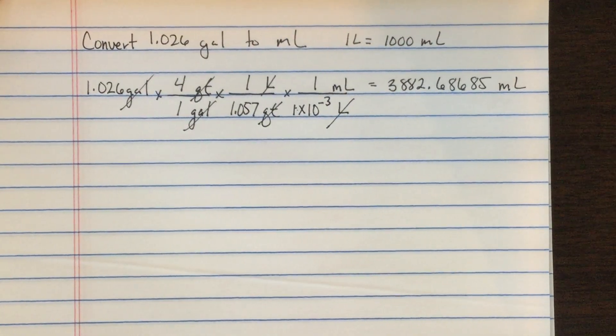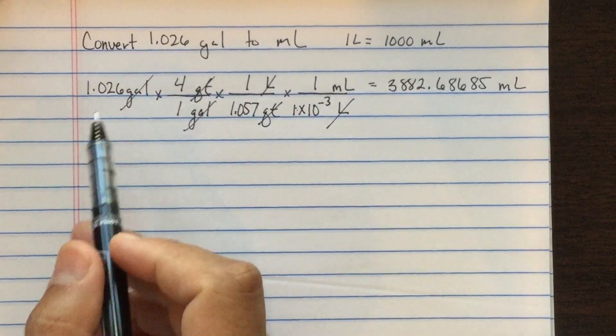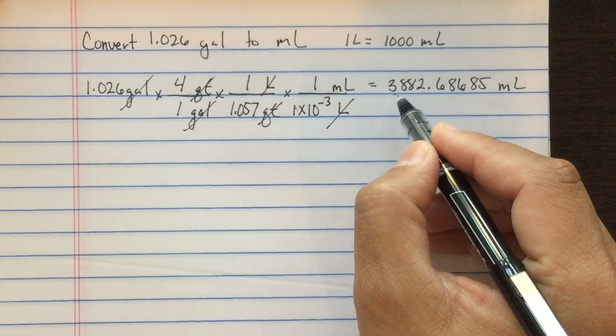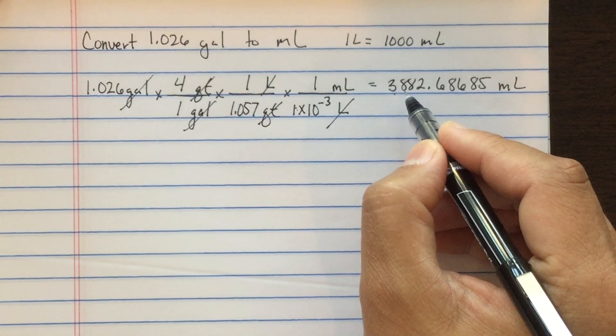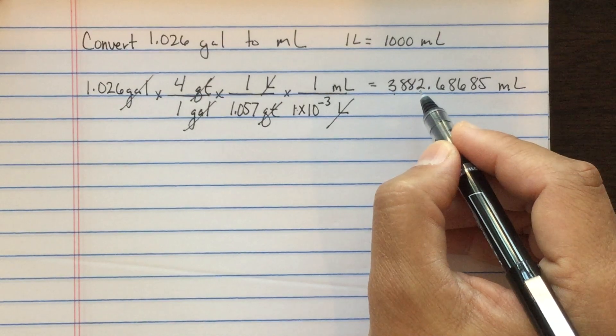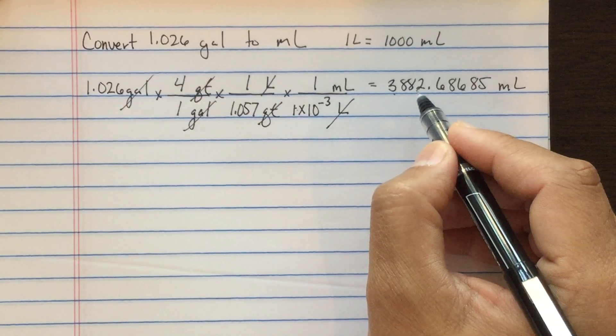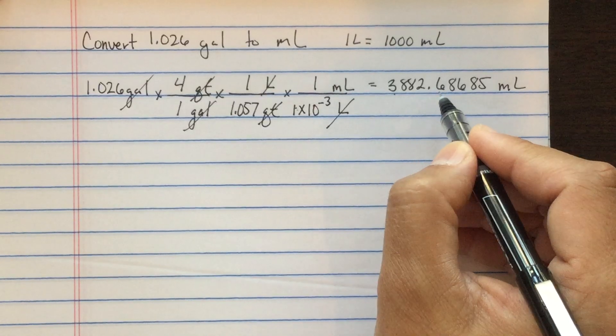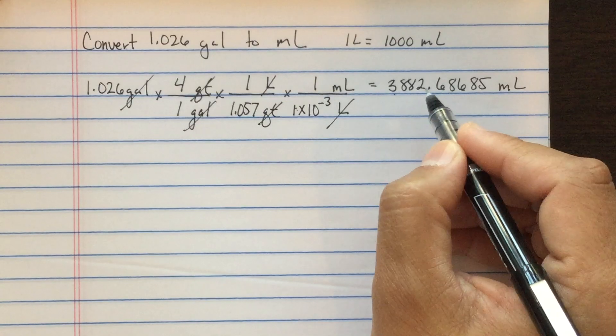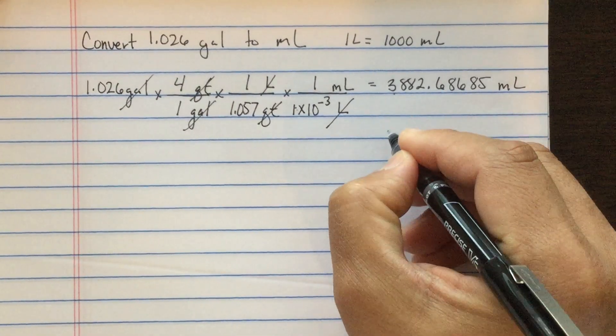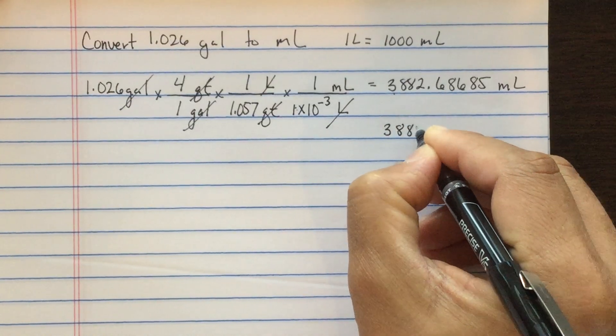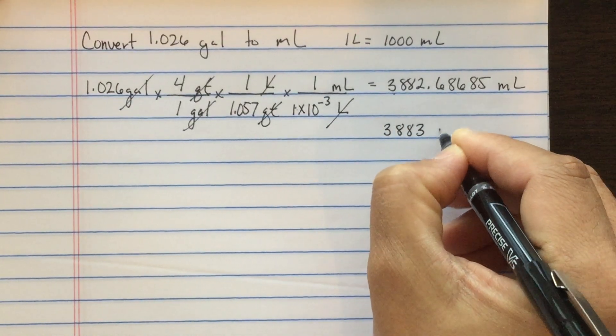We need to round to the correct significant figures. Here we want four significant figures. Three thousand - that's one, eight hundred - that's two, eighty - that's three, and two is four significant figures. We'll use our next value six, which is greater than five, to tell us to round up. So our answer to four significant figures: 3883 milliliters.